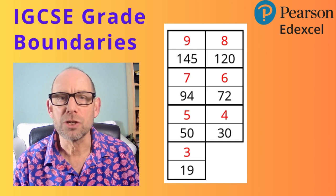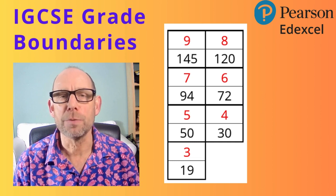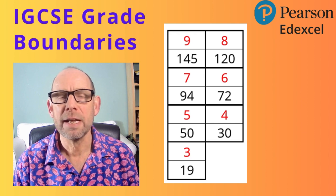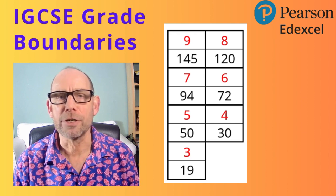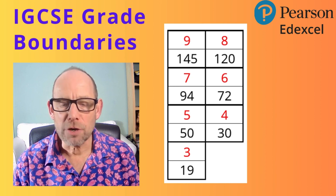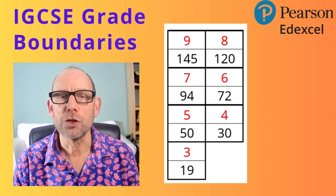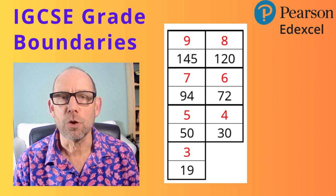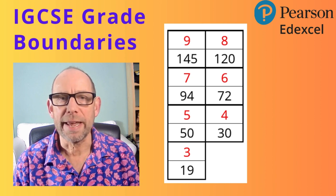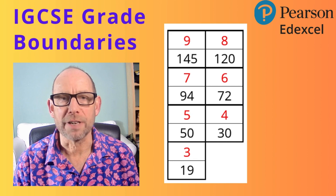Just to labour the point: to get a grade 5, you're looking at a total of 50 marks on the two papers — that's 50 out of 200, an average of 25 on paper 1 and 25% on paper 2. So have a look at this table, and it'll give you a good idea of what mark you should be aiming for on each of your papers, so that you can hit the total you want out of 200 to achieve that target grade you're after.